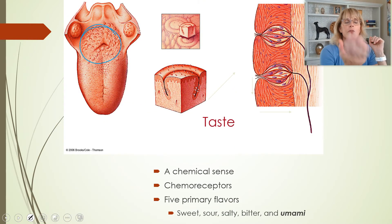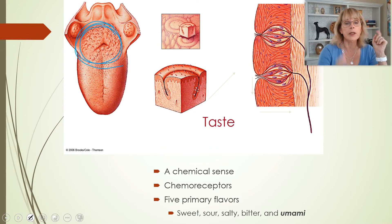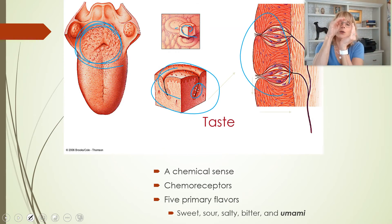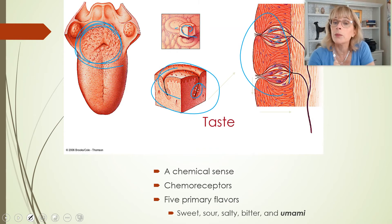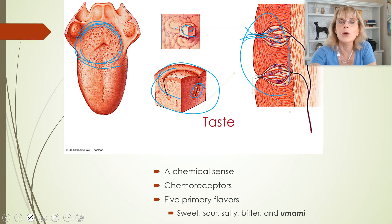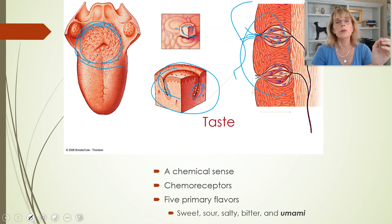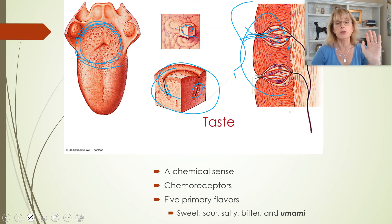When you look at the tongue, those bumps you're looking at are not taste buds — those are papillae. If you take papillae and cut them up and look with a microscope, you will see little groups of cells — sensory receptor cells that are chemoreceptor cells — sticking their noses out into that little crevice to experience flavors. As far as we know, humans can only taste five different flavors, but lots of different scents.